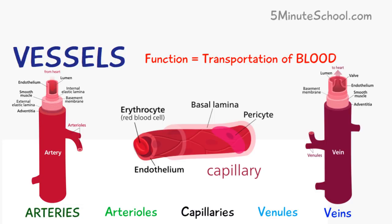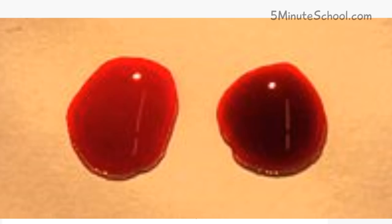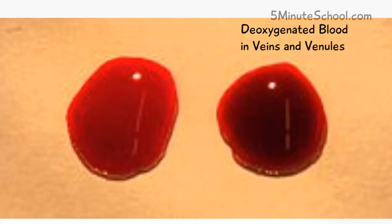Venules and veins return blood back to the heart. They carry deoxygenated blood, and the blood contained inside venules and veins is at a much lower pressure, so they contain valves to prevent the backflow of blood so that blood can only go in one direction. An interesting fact is that venules and veins contain much darker blood because there is less oxygen inside, which gives the hemoglobin a darker pigment.